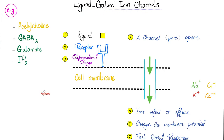Now, ligand-gated ion channels. We have the acetylcholine, the GABA story, the glutamate, and IP3. A ligand will come and bind to its receptor, then a conformational change will happen, and then a channel or pore will open in the cell membrane. The pore is not just a hole - it's a very complex protein structure under the microscope.